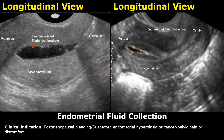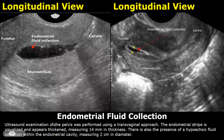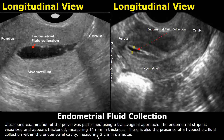Now we will look at endometrial fluid collection. The clinical indications can be postmenopausal bleeding, suspected endometrial hyperplasia or cancer, and pelvic pain or discomfort. These indications are non-specific as many pathologies share the same indications. In the findings, you can start by writing about the approach. Then write: 'The endometrial stripe is visualized and appears thickened,' followed by the measurement. Then write: 'There is also the presence of hypoechoic fluid collection within the endometrial cavity, measuring 2 cm in diameter.'